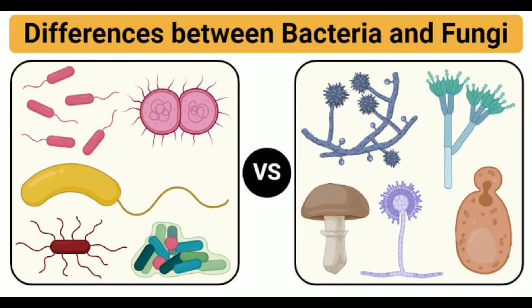pH: Bacteria grow best in a neutral environment with a pH range of around 6.5. Fungi mostly prefer a slightly acidic environment. Motility: Some bacteria are motile with flagella. Fungi are non-motile organisms. Nucleus: The genetic material in bacteria is localized in the nuclear region of the cytoplasm. The genetic material in fungi is localized in a distinct nucleus. Cell organelles: Bacteria have few membrane-less organelles. Fungi contain several membrane-bound organelles.